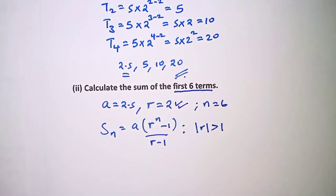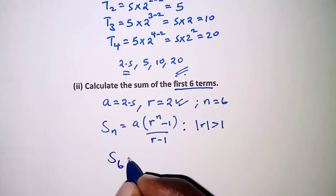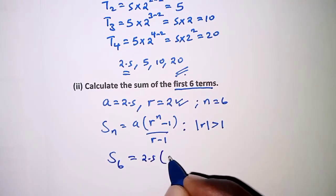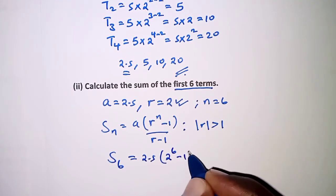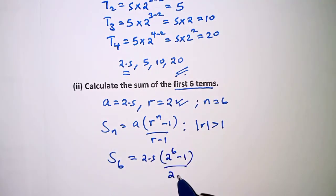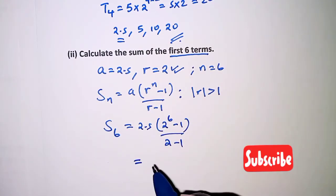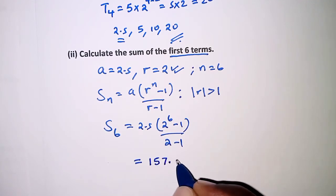So from there, the sum of the first 6 terms is: a equals 2.5 times r, which is 2, to the power 6 minus 1, all over 2 minus 1, and this should give us 157.5.